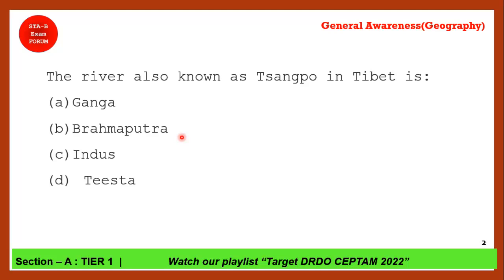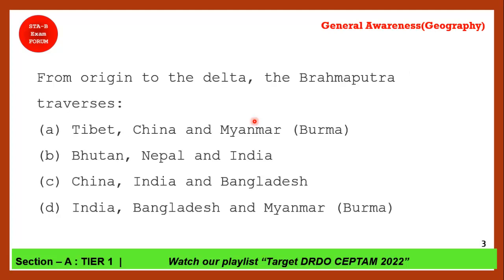Next question: From origin to the delta, the Brahmaputra traverses which countries? The correct answer is option C — China, India, and Bangladesh. Brahmaputra originates in Tibet, which is in China, then enters India, then enters Bangladesh.